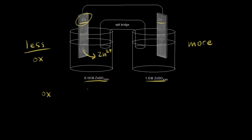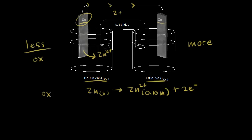So we have solid zinc turning into zinc 2+ — I'll write 0.10 molar to distinguish this from the other side — plus two electrons. Solid zinc loses two electrons to turn into zinc 2+. Those two electrons move through the wire and we create a current.